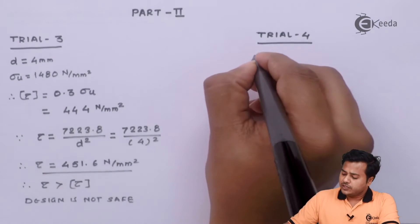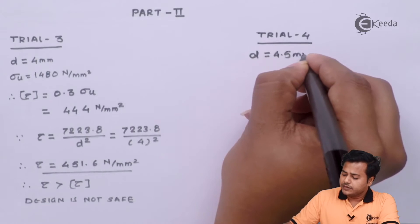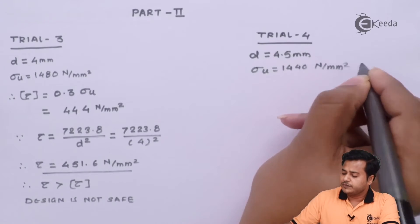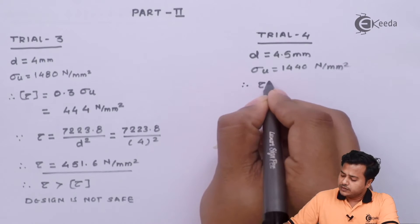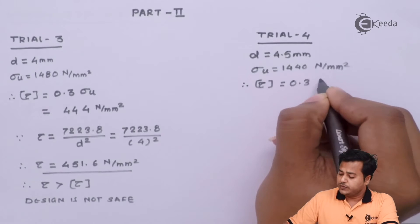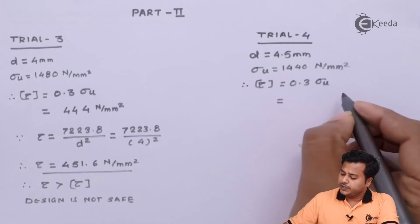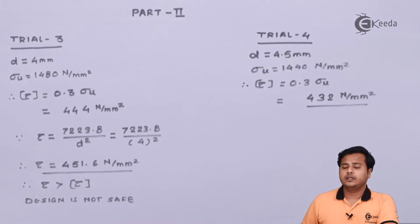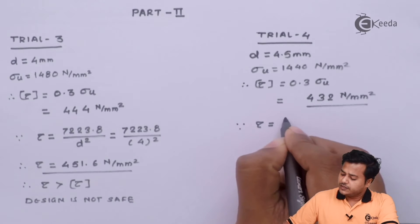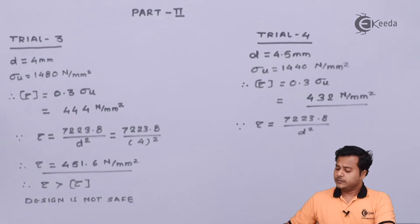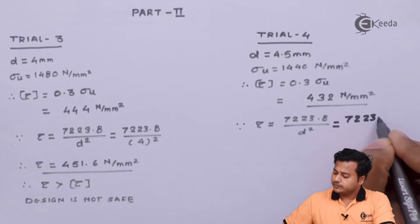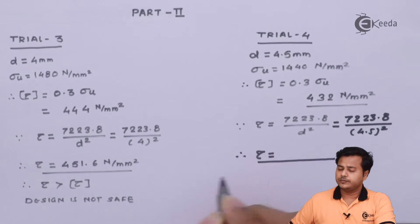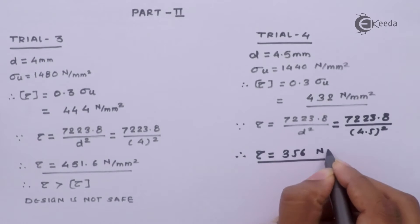So in the next selection the wire diameter becomes 4.5 millimeters and the ultimate stress value becomes 1440 Newton per millimeter square. From there we can easily find out the allowable tau value, which is 0.3 times the ultimate stress. After substituting the values the induced tau comes out to be approximately 356 Newton per millimeter square.